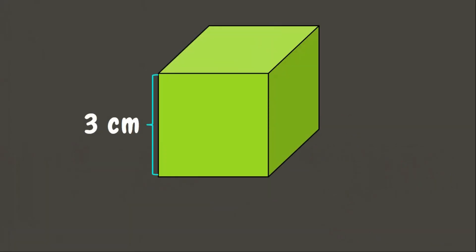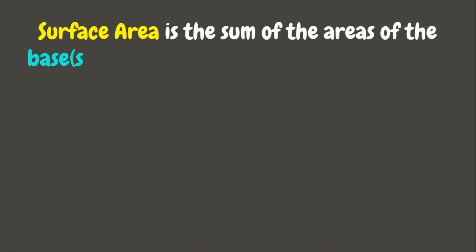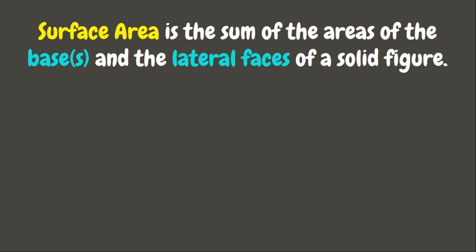Let's take a look at our first example. We have here a cube whose sides measure 3 centimeters. Now let us find its surface area. But wait, do you know what surface area means? Surface area is the sum of the areas of the bases and the lateral faces of a solid figure.